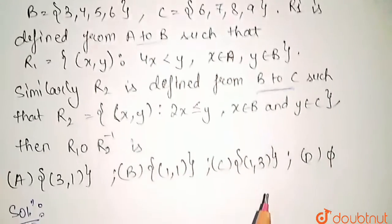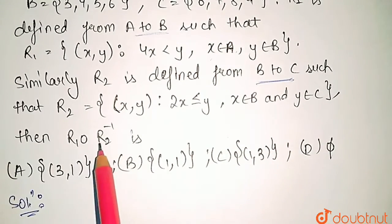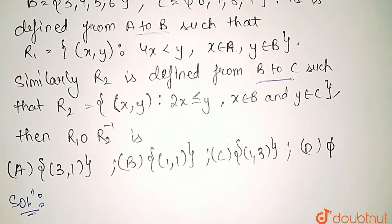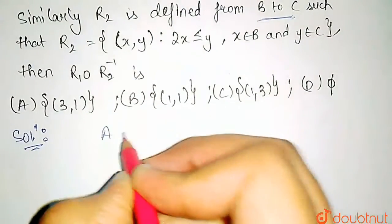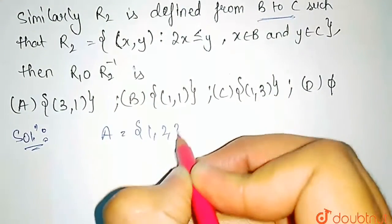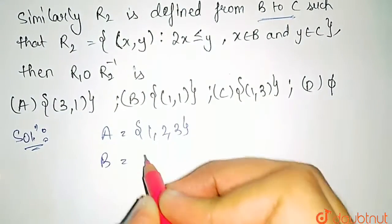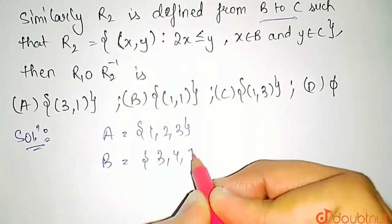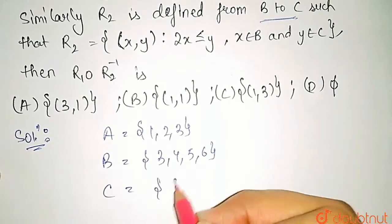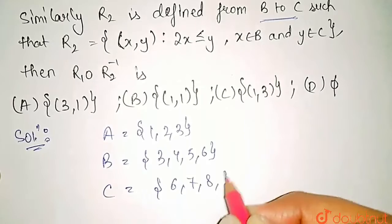Then we need to find the value of R1 ∘ R2 inverse. So now, first of all, writing the elements: A have {1, 2, 3}, B have {3, 4, 5, 6}, and C have {6, 7, 8, 9}.